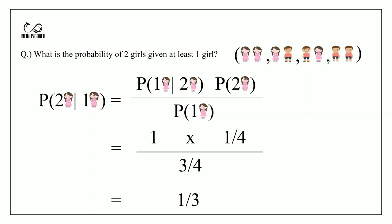The probability of one girl given two girls would be one hundred percent, the probability of two girls is 1/4, and the probability of one girl is 3/4. So our final answer is 1/3.